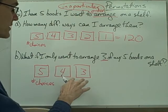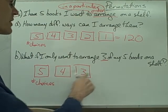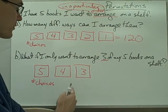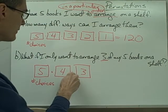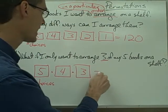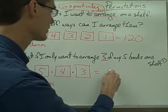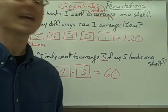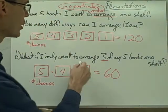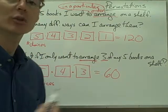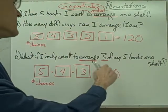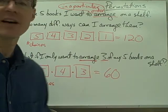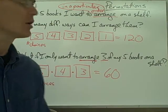Now I stop because I'm only interested in arranging three of them — the first book, the second book, and the third book. Using the fundamental principle of counting, I multiply these numbers together and that gives me 60 different ways of arranging in a particular order three of my five books on the shelf.